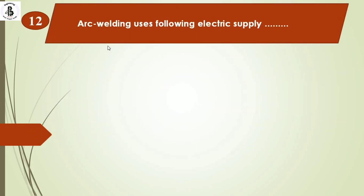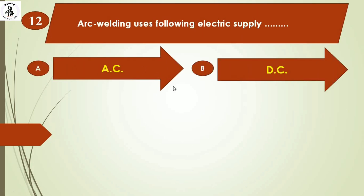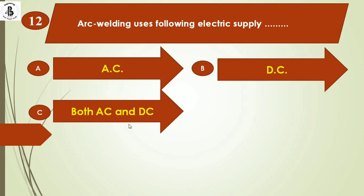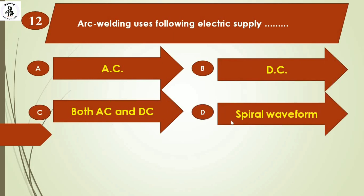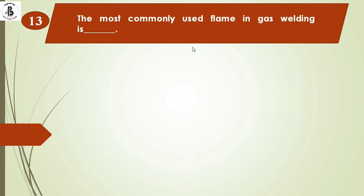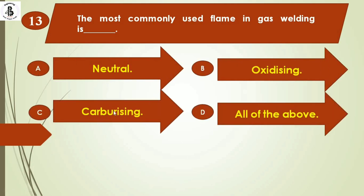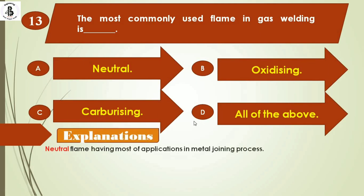Next question: arc welding uses which electric supply? Option A: AC supply. Option B: DC supply. Option C: both AC and DC. Option D: spiral waveform. Arc welding uses both AC and DC power supply, so the right answer is option C. Next: the most commonly used flame in gas welding is — option A: neutral, option B: oxidizing, option C: carburizing, option D: all of the above. Neutral flame has maximum applications in engineering metal joining, so the right answer is option A.